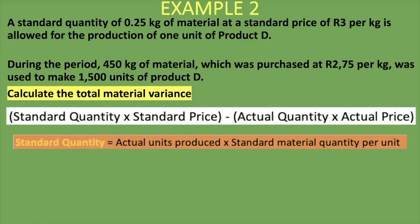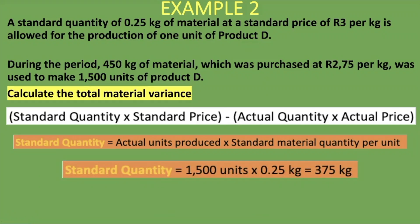To get the standard quantity: actual units produced times standard material quantity per unit. We produced 1,500 units, and the standard quantity allowed per unit is 0.25 kg — that is how much should be used for each unit. So we take 1,500 times 0.25 kg, which gives us 375 kg as our standard quantity.